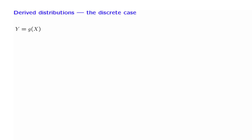As a warm-up towards finding the distribution of a function of random variables, let us start by considering the discrete case. Let x be a discrete random variable, and let y be defined as a given function of x. We know the PMF of x and wish to find the PMF of y.